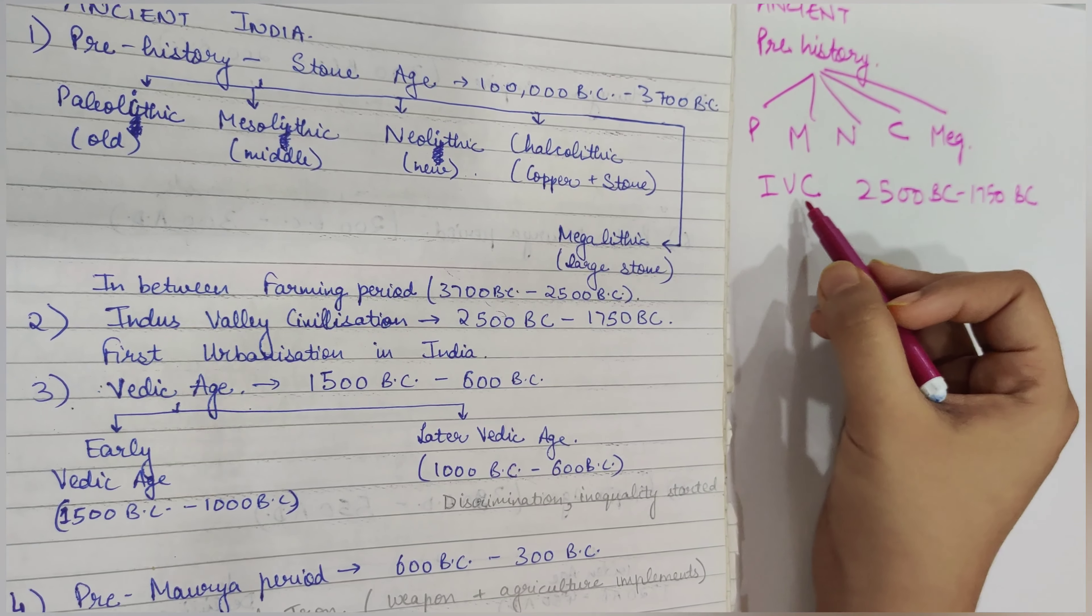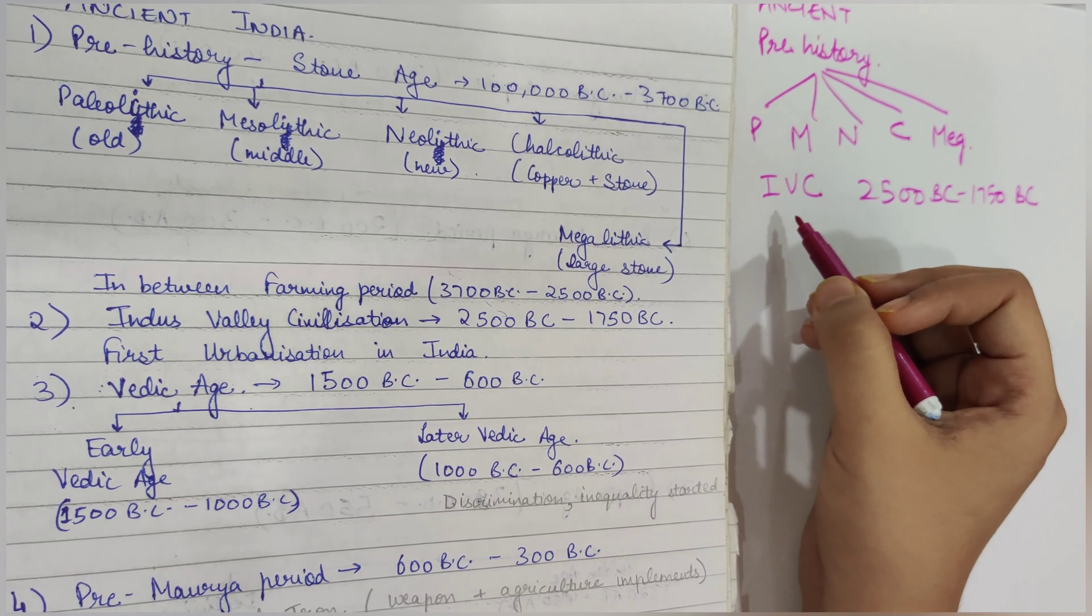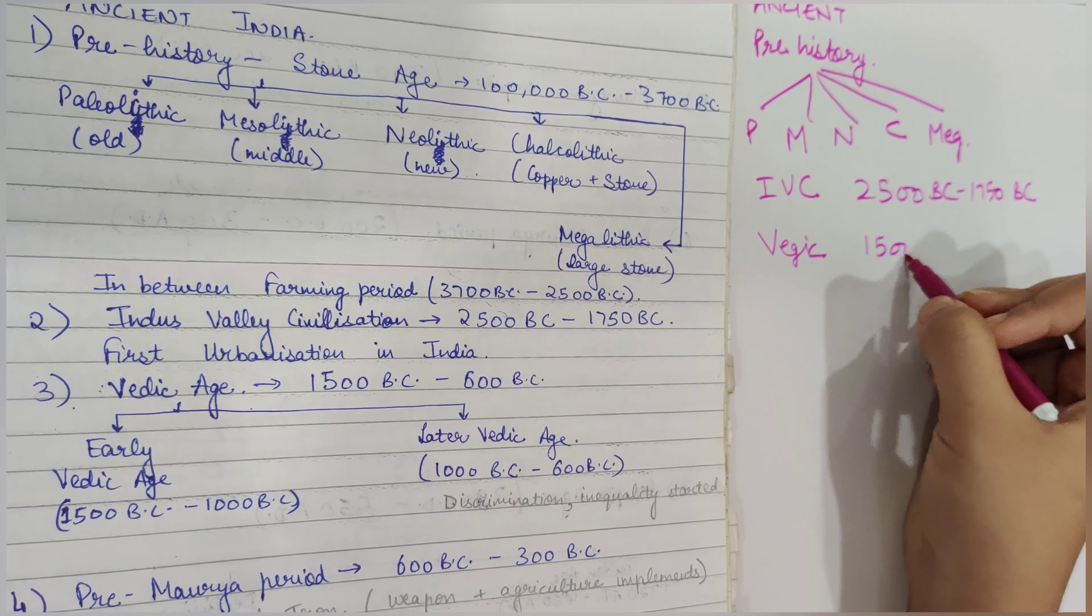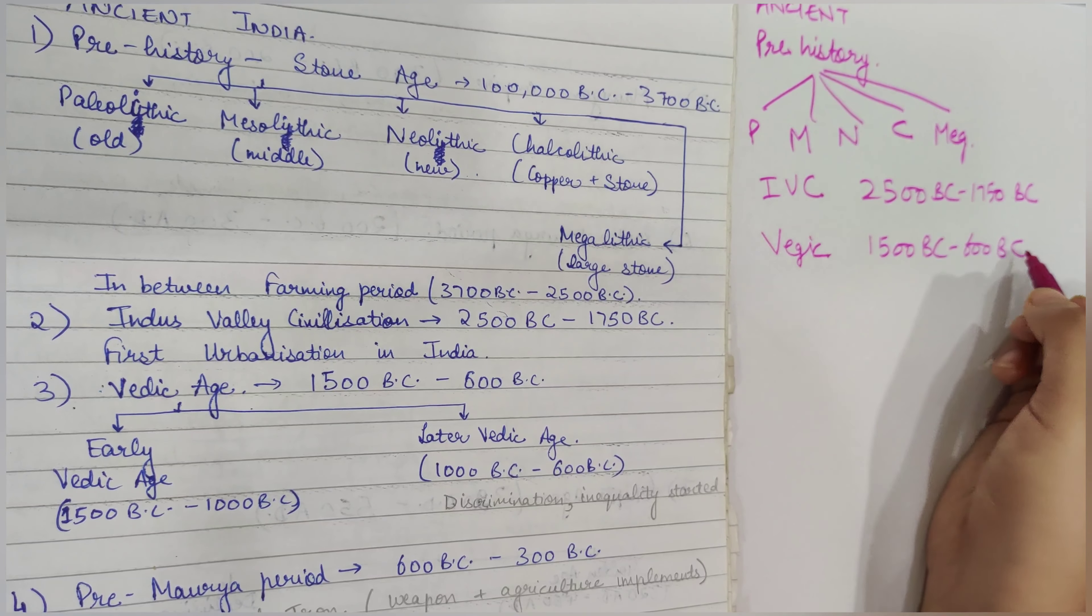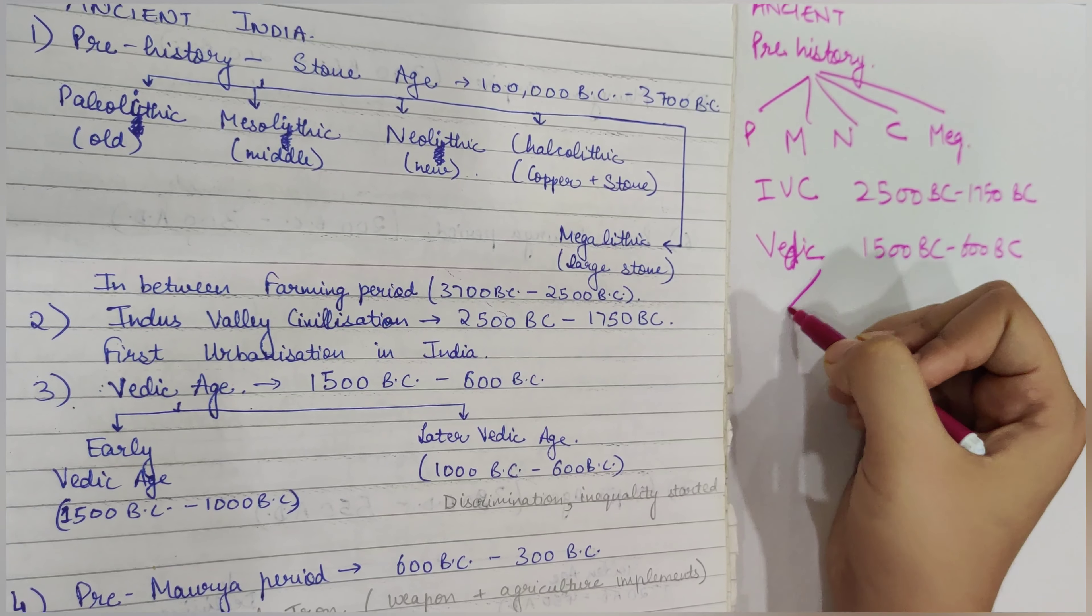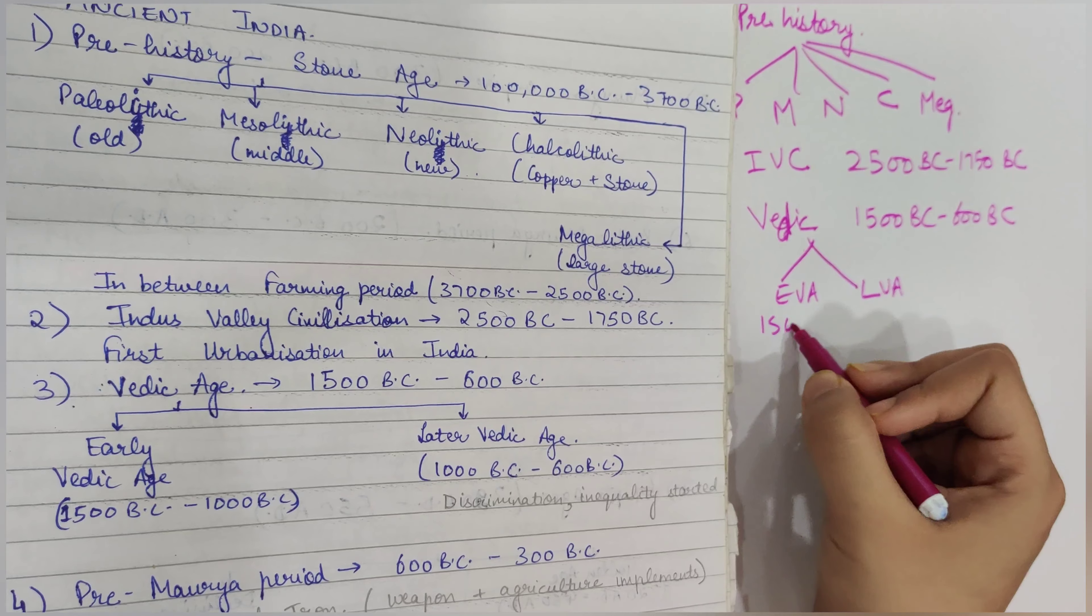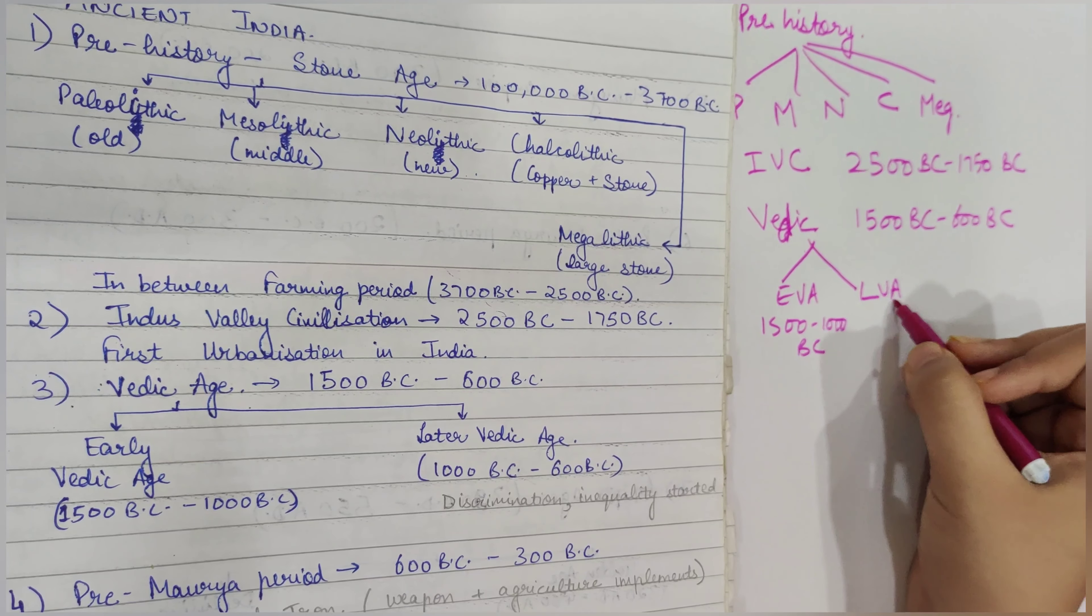Indus Valley Civilization is also known as the first urbanization in India. Next comes the Vedic Age, which is from 1500 BC to 600 BC. The Vedic Age is divided into two: Early Vedic Age from 1500 to 1000 BC, and Later Vedic Age from 1000 to 600 BC.